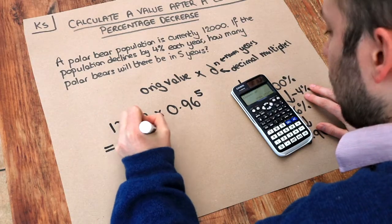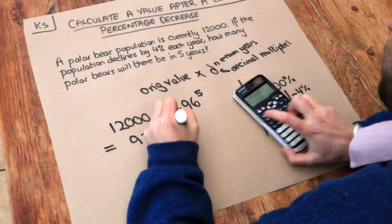Then we put that into our calculator and that gives us 9,784 bears to the nearest bear.